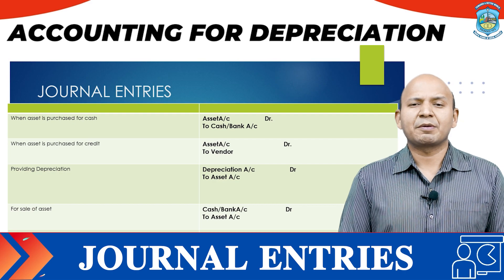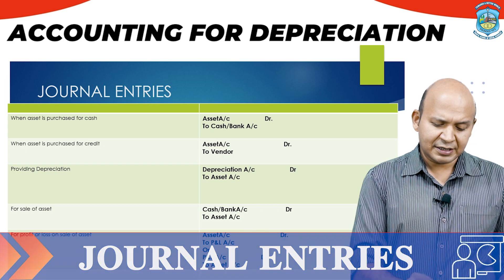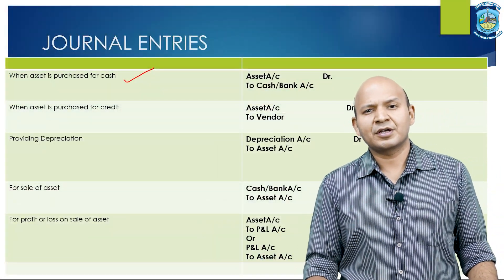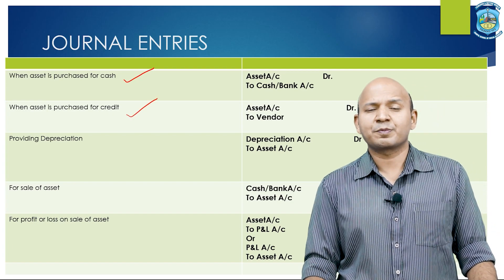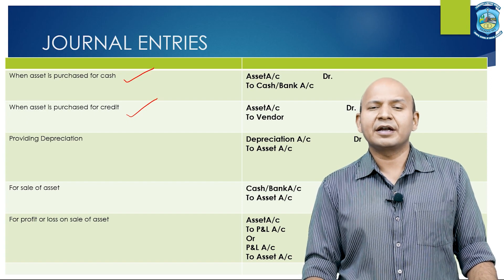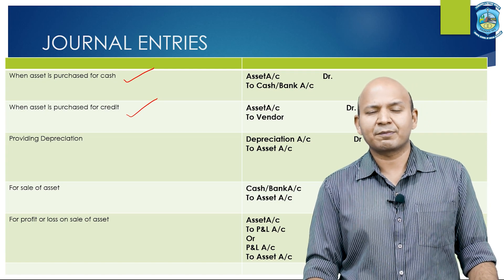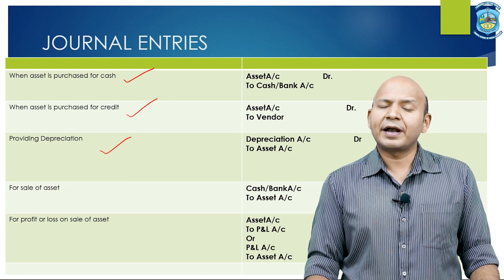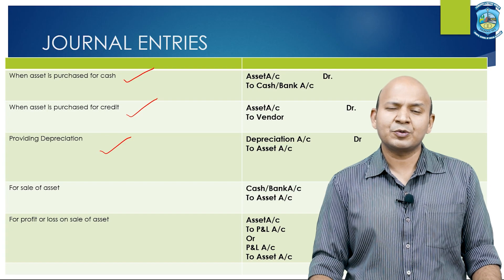I will now explain some important journal entries passed under this method. When an asset is purchased for cash, the entry is: asset account debit to cash account. When the fixed asset is purchased on credit, the entry is: asset account debit to vendor's account. For providing depreciation, the entry is: depreciation account debit to asset account.